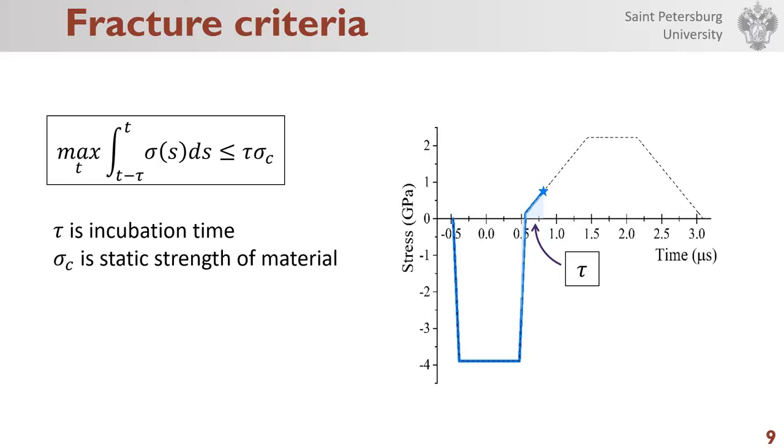The graph shows the calculation of stress for trapezoidal inputs in the spall section. The criterion is satisfied on the blue highlighted area, which duration equals τ. At the end of the area, fracture occurs that is indicated by an asterisk on the graph.